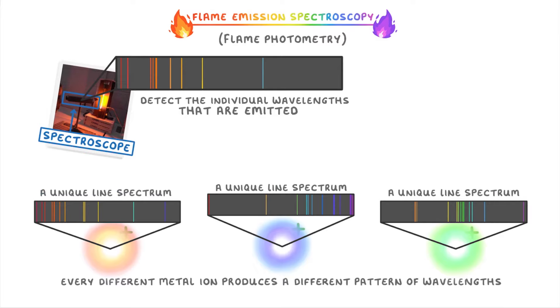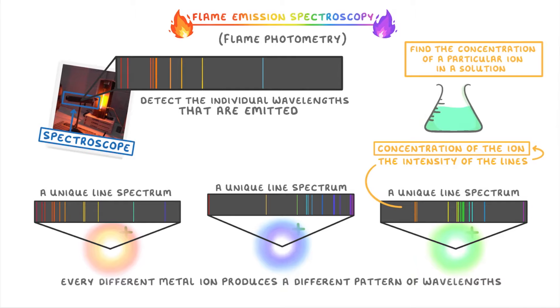Another benefit of spectroscopy is that the intensity of the lines on the spectrum, so whether they're dull or very bright, indicates the concentration of the ion. So we can use it to find the concentrations of particular ions in a solution.